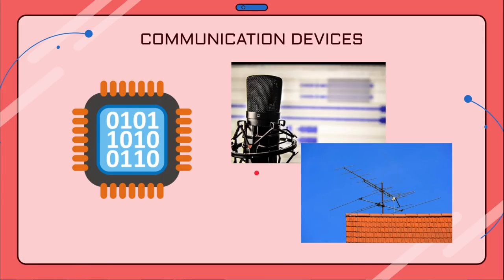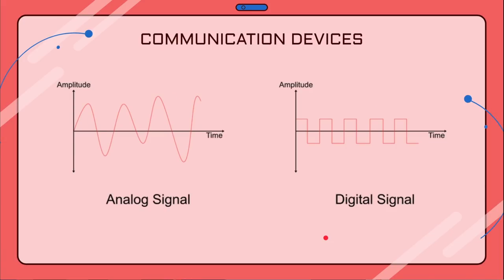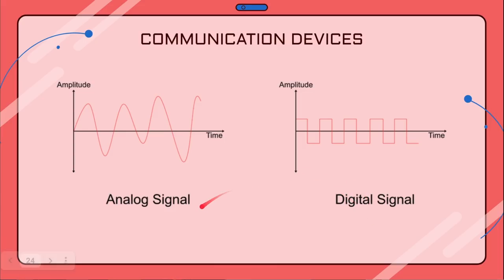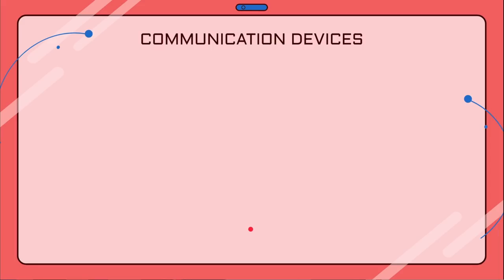Analog signals are any continuous signals that use time-variable quantities, such as audio recordings, television broadcast signals, and radio signals. As you can see from the diagram, digital signals are very different from analog signals. To help with converting between these two signals, the modem comes to the rescue.